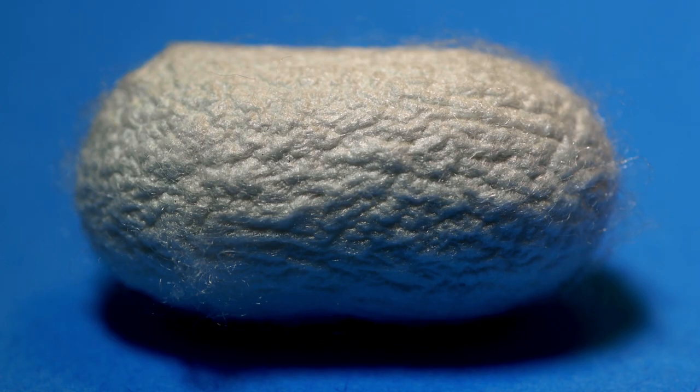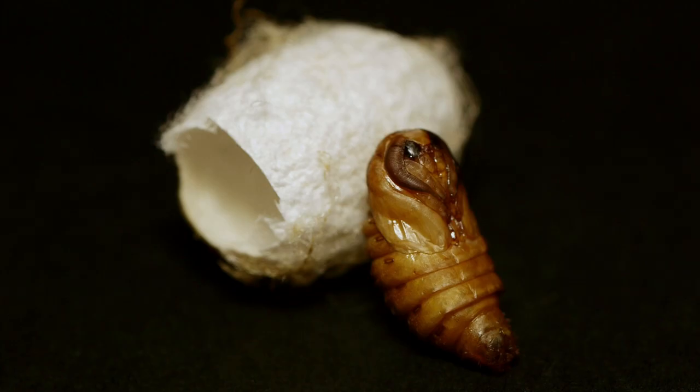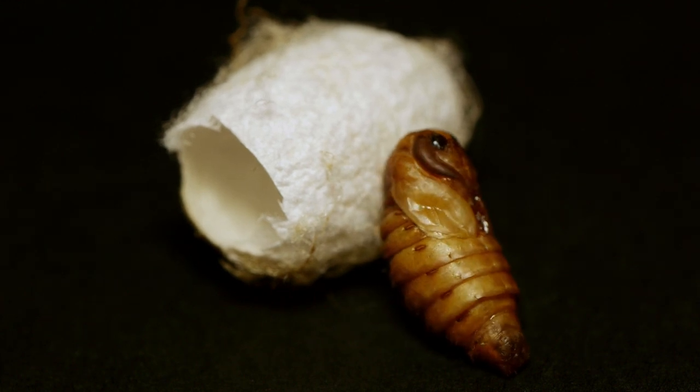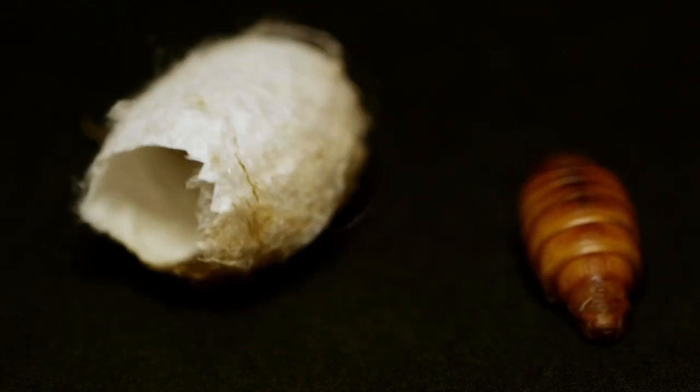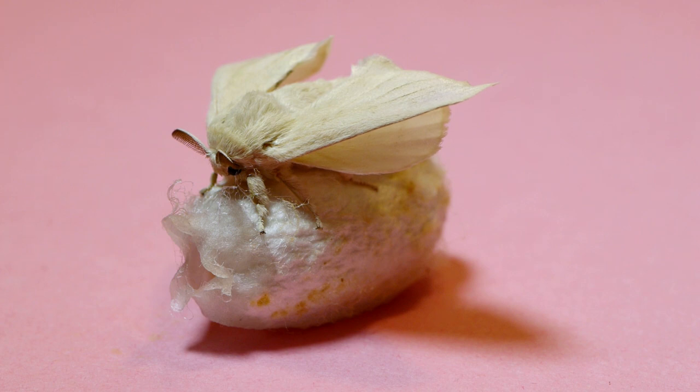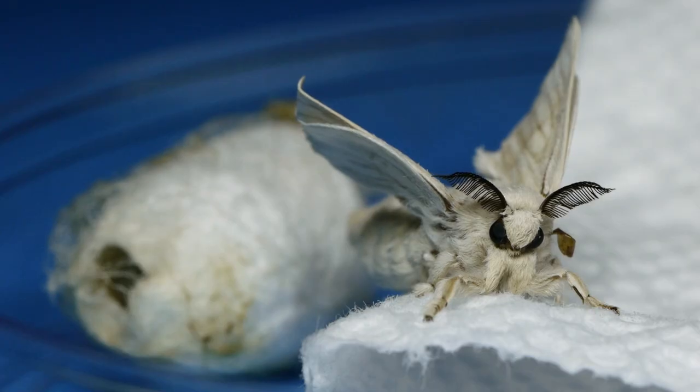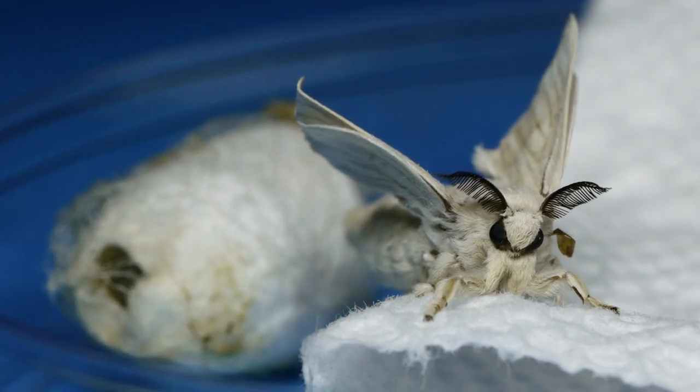After the larvae have fed for about 30 days and they become mature, they spin a cocoon. Silkworms spin a cocoon as they transition to the pupal stage, on their way to becoming a moth. When the moth emerges from the pupa, the moth has to cut a hole in one end of the cocoon to emerge.